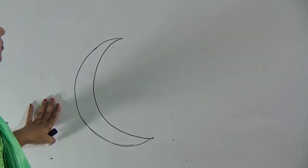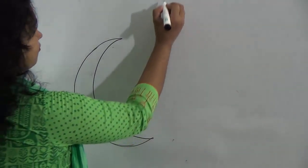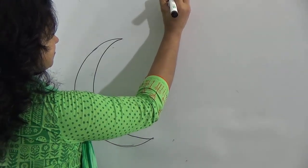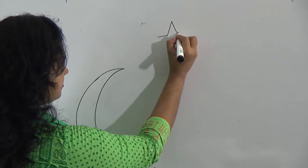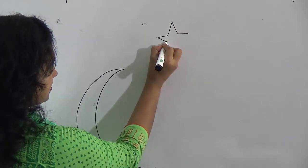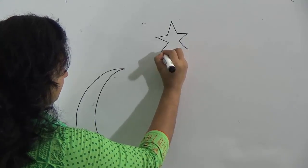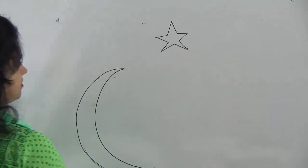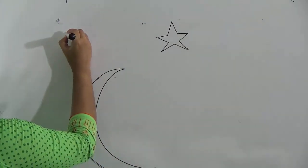Then you will draw the stars like this: first like this, then straight line, then this line, then this line, like this, okay. You draw a lot of stars.